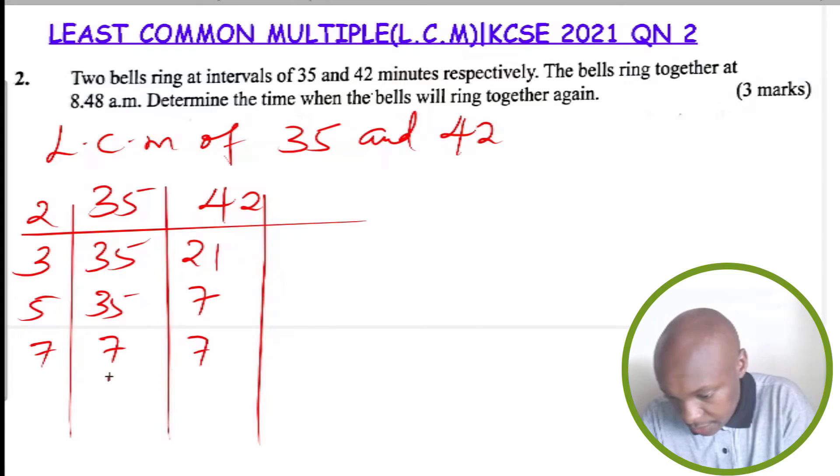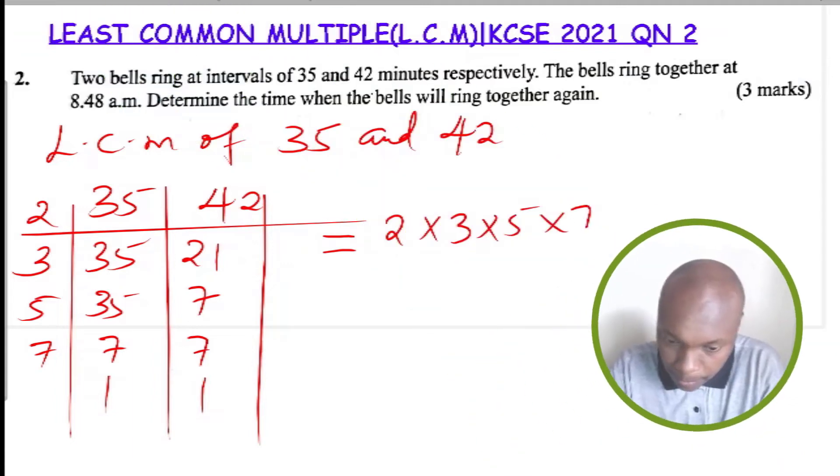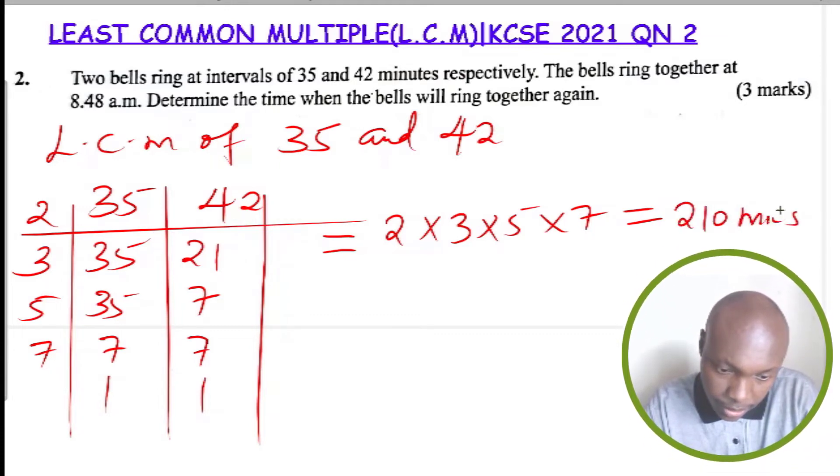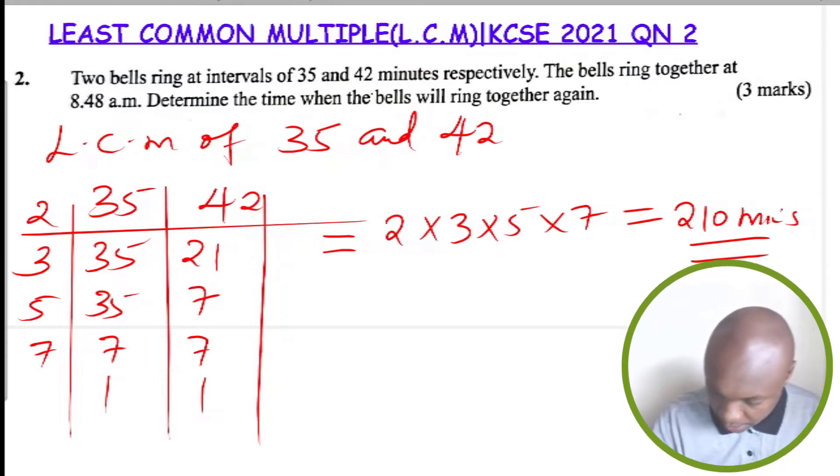So the LCM therefore is two multiplied by three by five by seven. Multiplying this, you get six multiplied by 15, this will give 210 minutes. So 210 minutes is the time that will be taken for the bells to ring again.